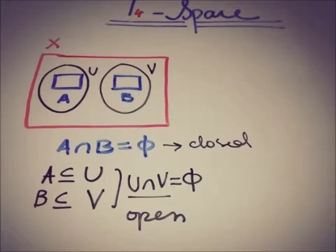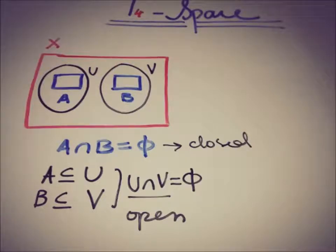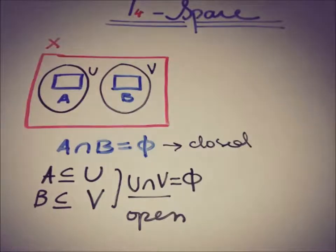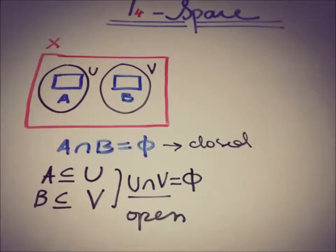Again, a normal space requires two distinct closed sets in a topological space and two open sets such that one closed set is a subset of one open set and the other closed set is a subset of the other open set. When we take the intersection of those open sets U and V, we get the empty set. So this space is said to be a normal space.